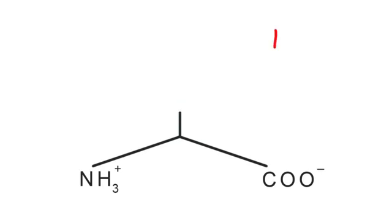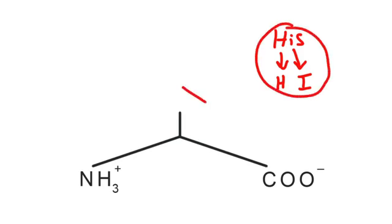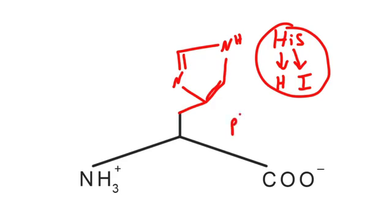Next up is histidine, and its three-letter abbreviation is HIS. H is also its single-letter abbreviation, and I use the I to remind me that it has the imidazole group in its side chain. There's no real shortcut — you just need to memorize the imidazole because of the I. So we draw the imidazole group and connect it to the alanine backbone. The pKa for histidine is 6 exactly. A trick I use: 'hiss' sounds like six — I go from hiss to hicks to six, and for some reason it's stuck.